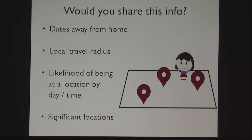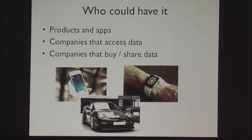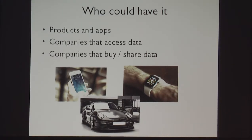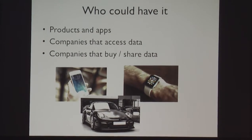I also want you to think about: would you share this information? This is the same slide as before showing what I was able to figure out about yourself. The people that could have this information are products and apps — products like your smartphone, your smartwatch, whatever — and apps that you install on your phone. Also, companies that access that data could have this information, and companies that buy and share data could have this information.